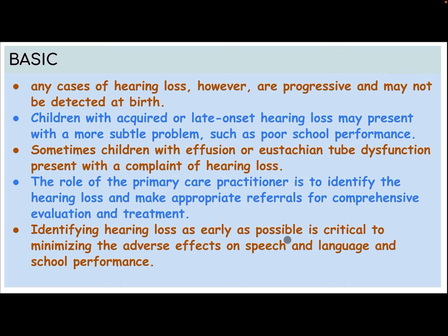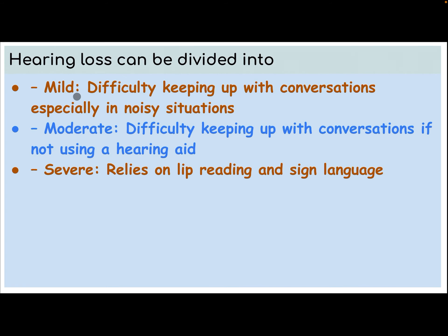Identifying hearing loss as early as possible is critical to minimize the adverse effect on speech, language, and school performance. Hearing loss can be divided into: mild — difficulty keeping up with conversation, especially in a noisy situation; and moderate — difficulty keeping up with conversation if not using a hearing aid.